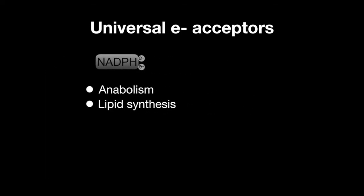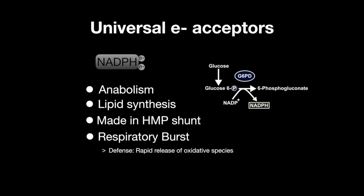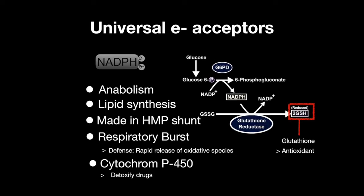NADPH is produced in the HMP shunt and is used in respiratory burst — when cells rapidly release oxidative species as a defense mechanism against infection, with NADPH being the primary substrate — the cytochrome P450 system, which detoxifies cells from drugs, and glutathione reductase, which is involved in creating glutathione to manage cellular oxidative stress.